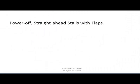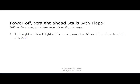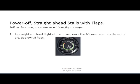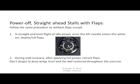Next is a power-off, straight-ahead stall with flaps — next most exciting. Follow the same procedure as without flaps, except in straight-and-level flight at idle power, once the airspeed indicator needle enters the white arc, deploy full flaps. The white arc means it's okay to put your flaps out. During stall recovery, after applying full power, retract the flaps. Don't forget to keep the wings level and the ball centered throughout the exercise.